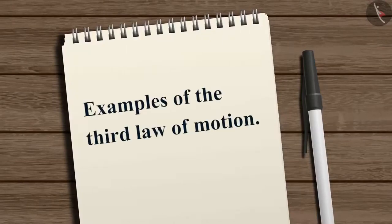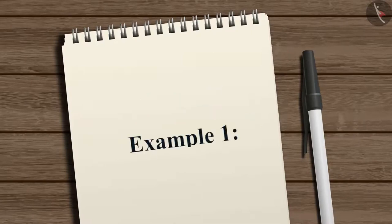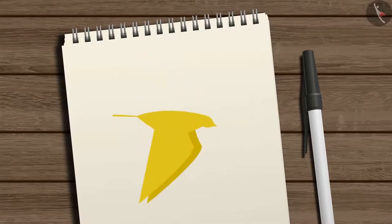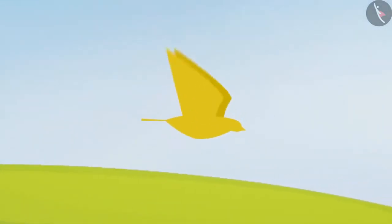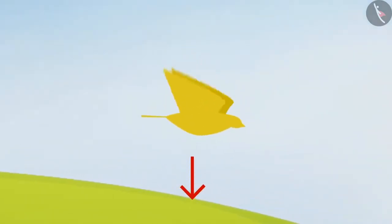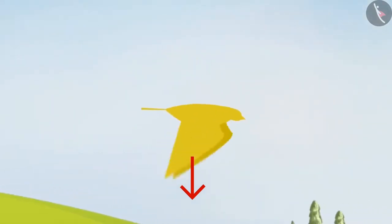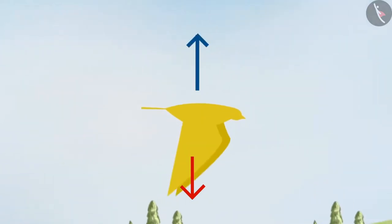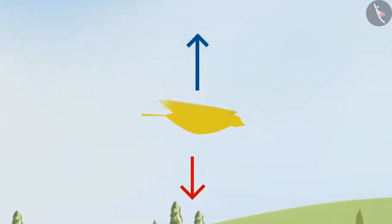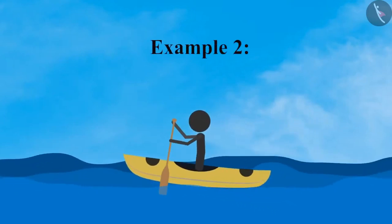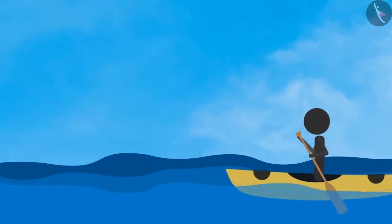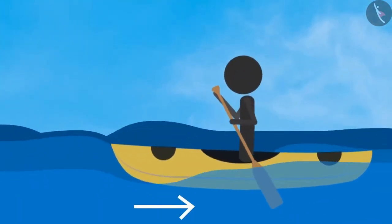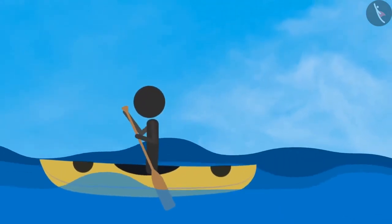Let us look at two examples to understand the third law better. Example 1: when a bird flaps its wings downwards trying to lift off, it creates a force that pushes the air downwards, which results in an equal and opposite force that pushes the bird upward and helps it fly. Example 2: while rowing a boat, pulling the oar backwards through the water generates an equal and opposite force which helps the boat move forward.